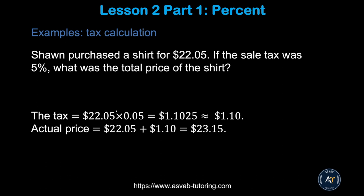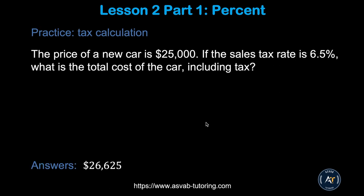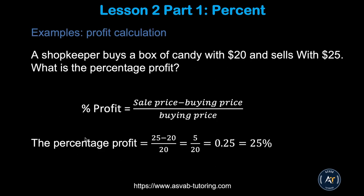Next: tax calculation. Percent means every hundred dollars. Sean purchases a shirt for $22.05; if the sales tax is 5%, what is the total price? Find 5% of $22.05 by converting to decimal and multiplying — you get approximately $1.10. Since we're working with money, round to two decimal places. Add that to $22.05 to get a total of $23.15. Try the practice problem and find the correct tax amount.